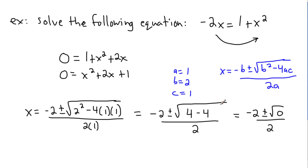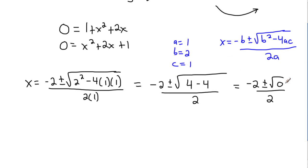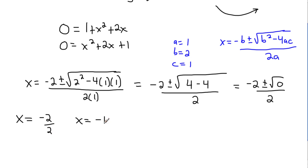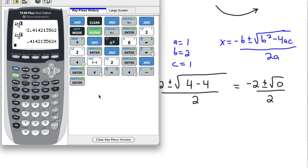Since the square root of 0 is just 0, we have x = (−2 ± 0) / 2. The plus or minus 0 does nothing, so it's just minus 2 over 2. Reducing that, minus 2 divided by 2 gives x = −1. We only have one answer.